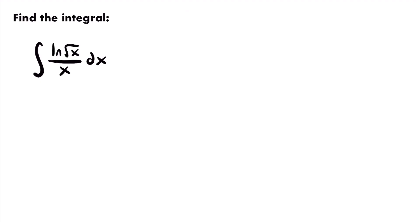We can't set u equal to the inside function of the composite function, and we certainly can't set u equal to one divided by x — the derivative of one divided by x is not the natural log of the square root of x. It seems like we're stuck and need some other integration technique, but we actually don't.